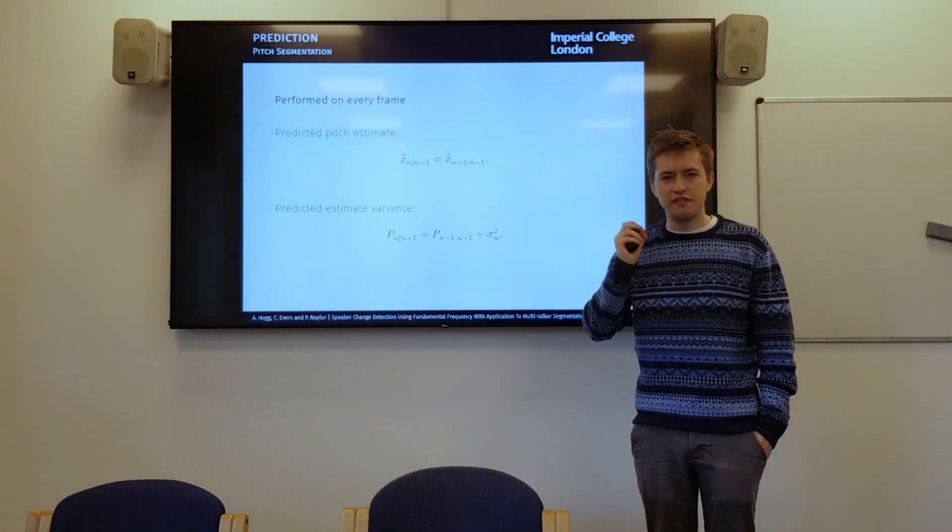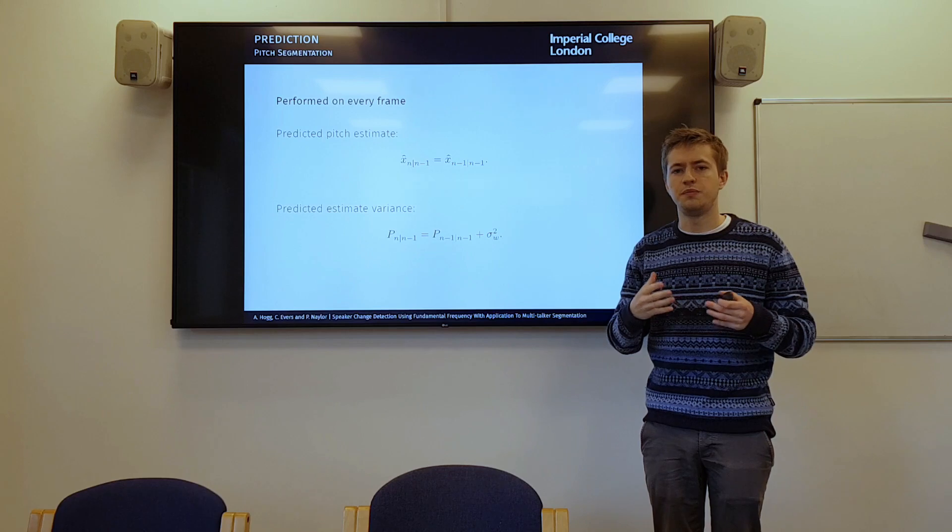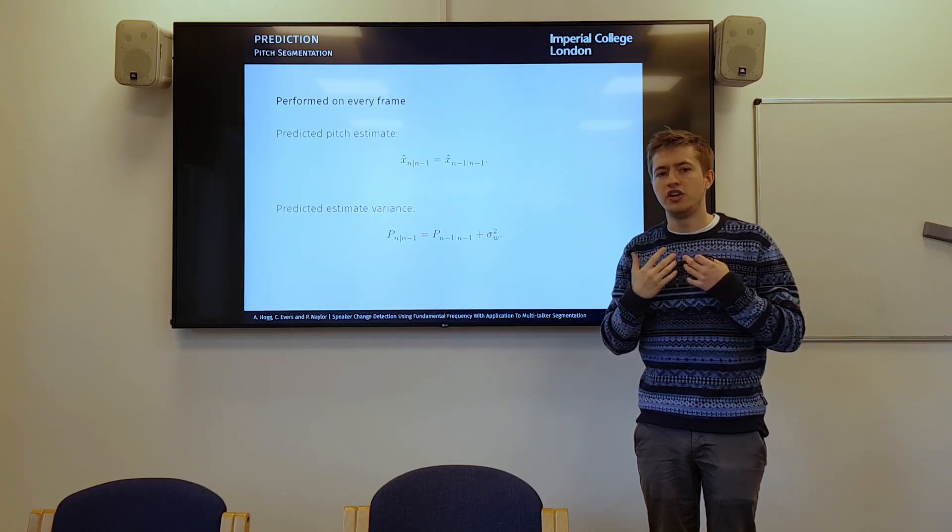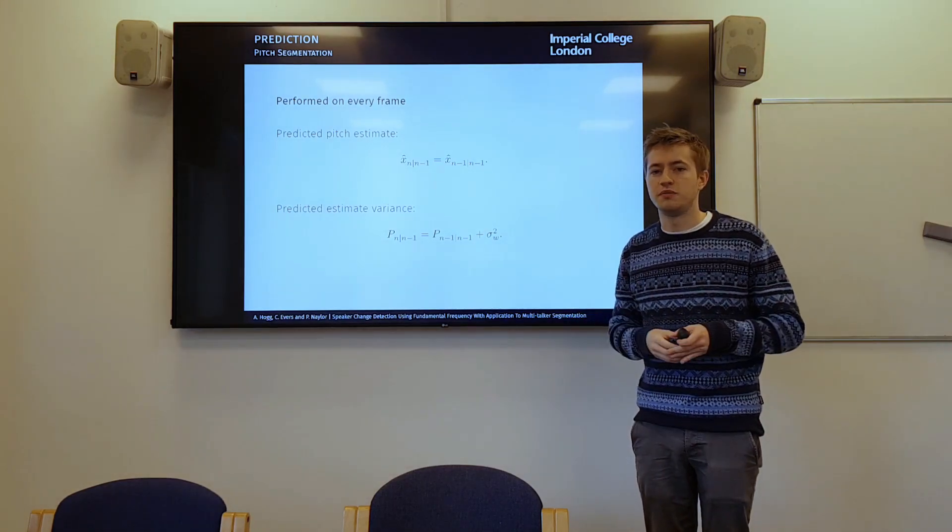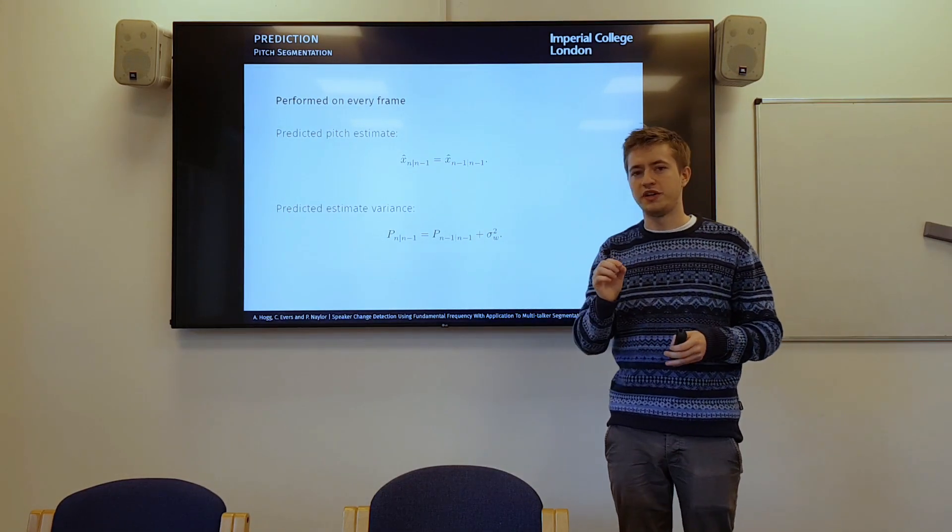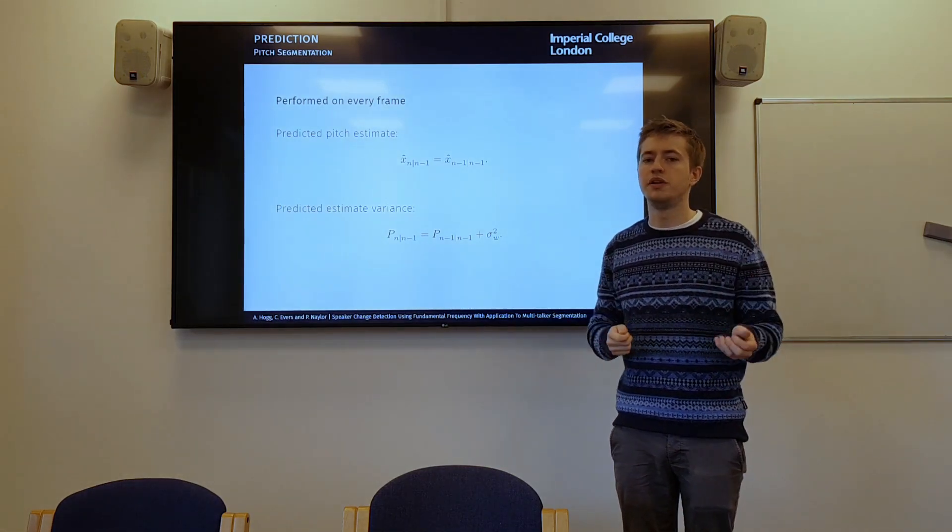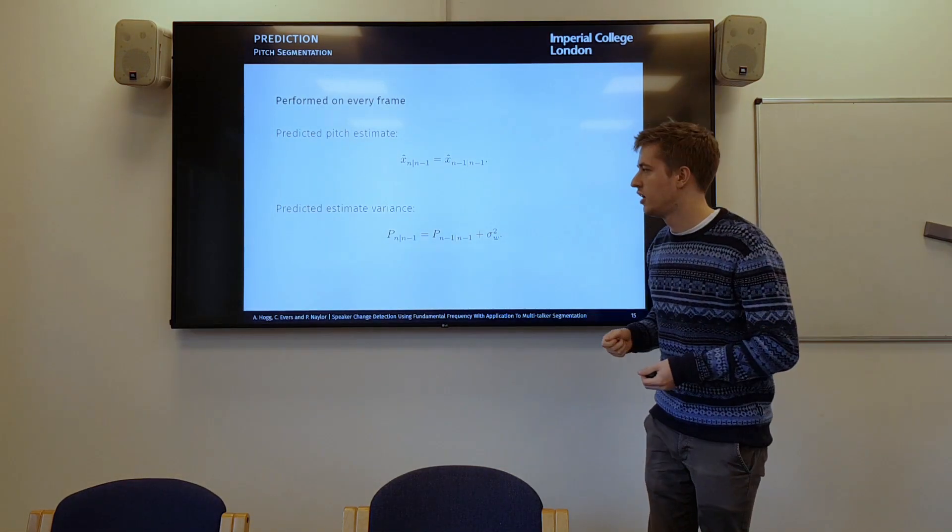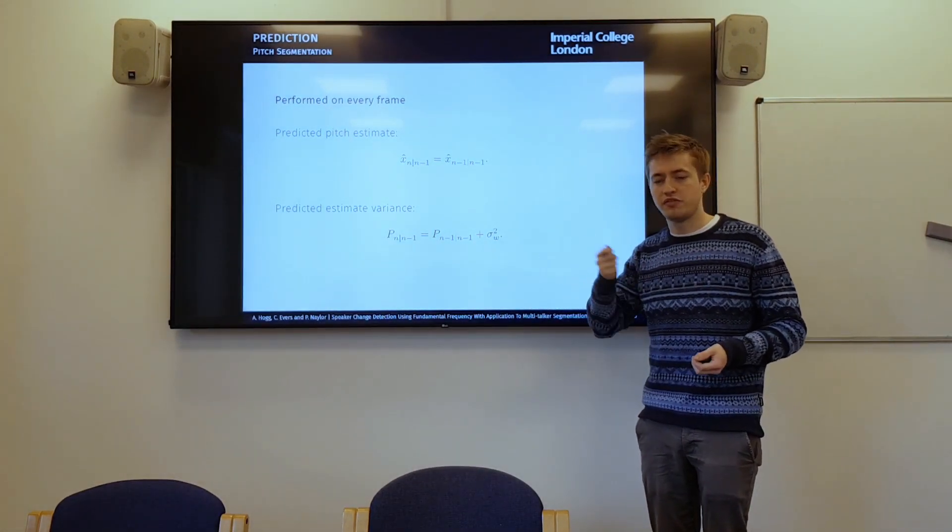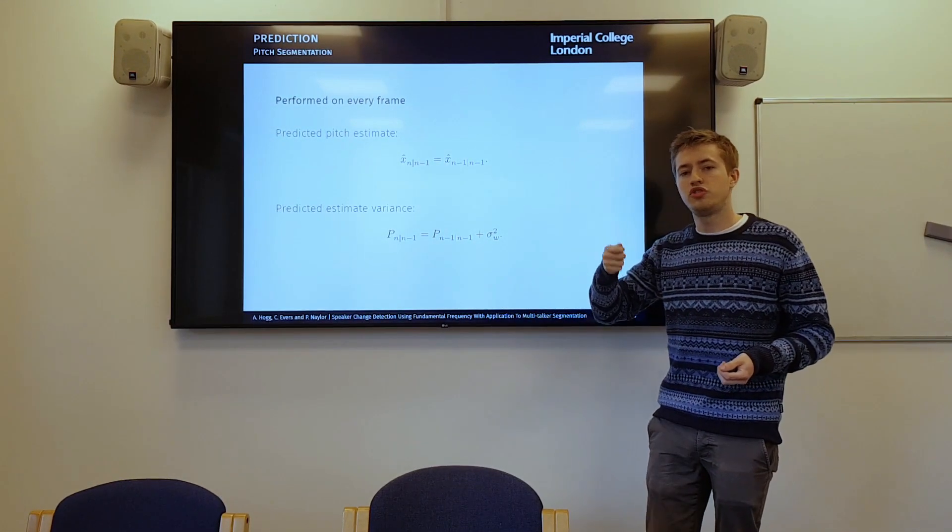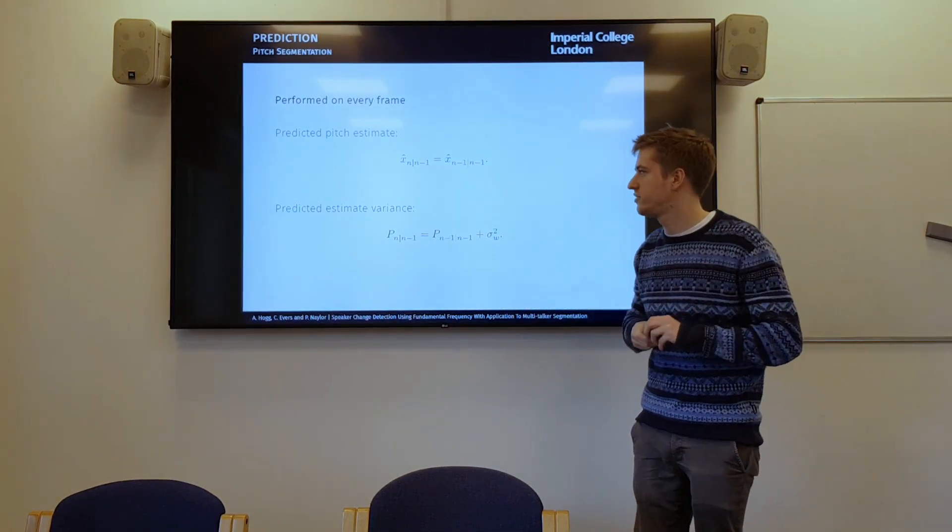And then obviously not every frame actually has a voiced measurement. So obviously pitch is only meaningful if you've got some voiced speech. If you've got some unvoiced speech or some noise, then the pitch is actually a meaningless value. So our pitch estimation algorithm gave us two things. It gave us the pitch estimate and the probability that the frame was voiced. And so using that, we do a prediction on every single step, every single frame, but we don't do the update. We only do the update when we get a reliable measurement. So that's if the frame is actually voiced.